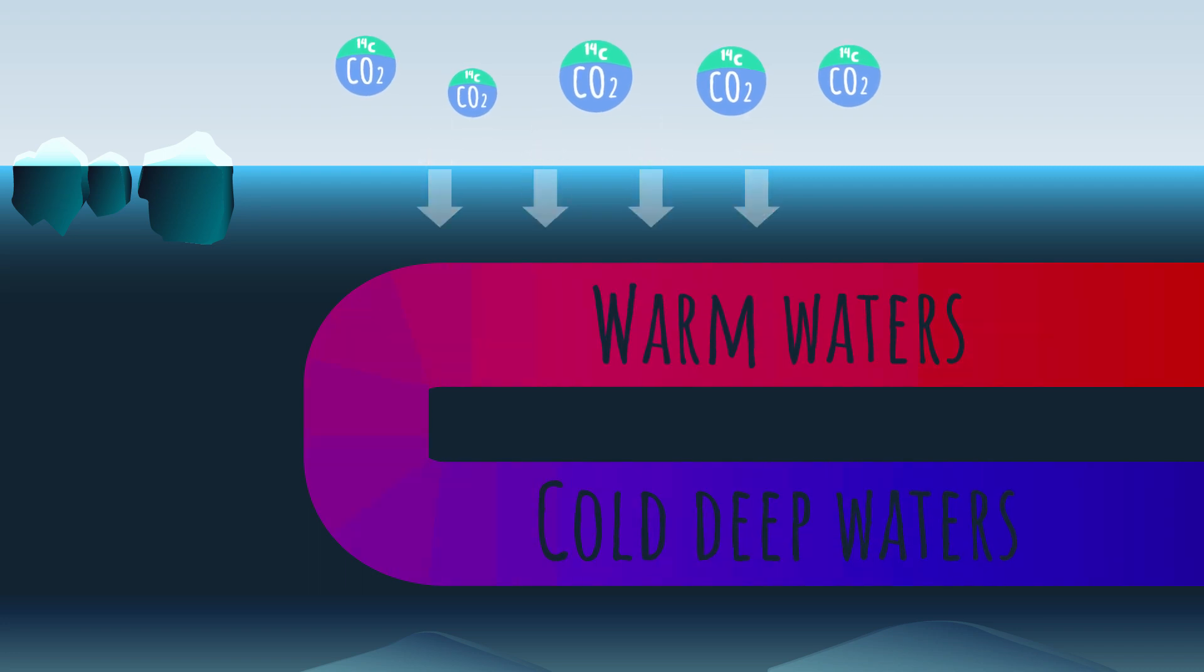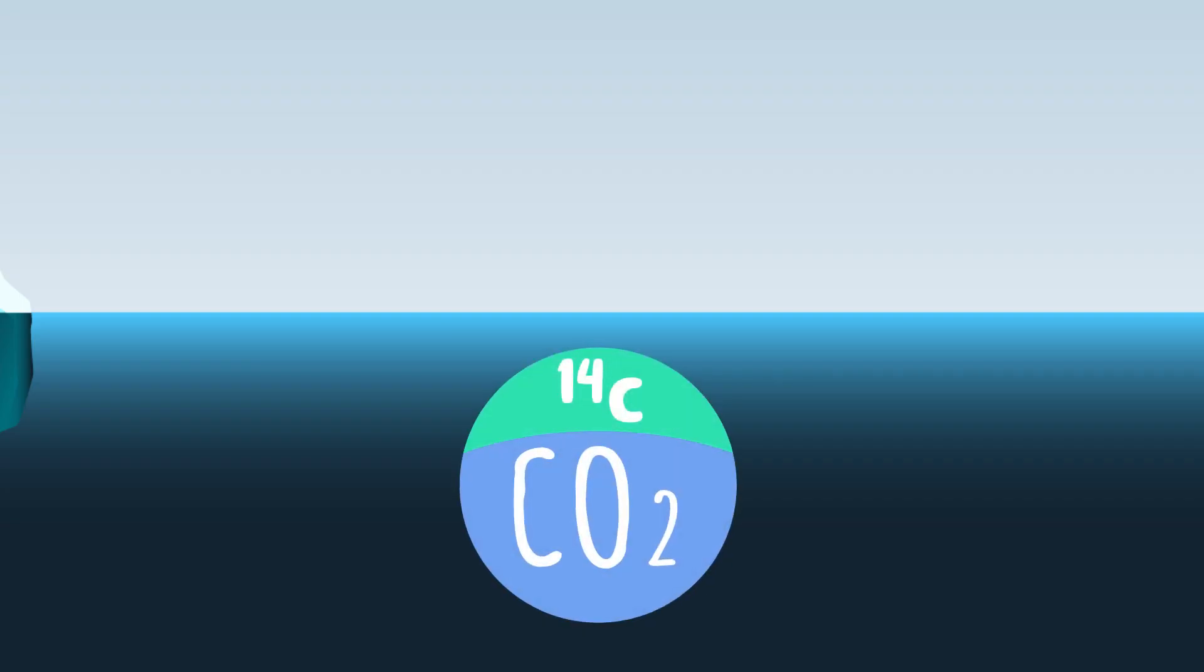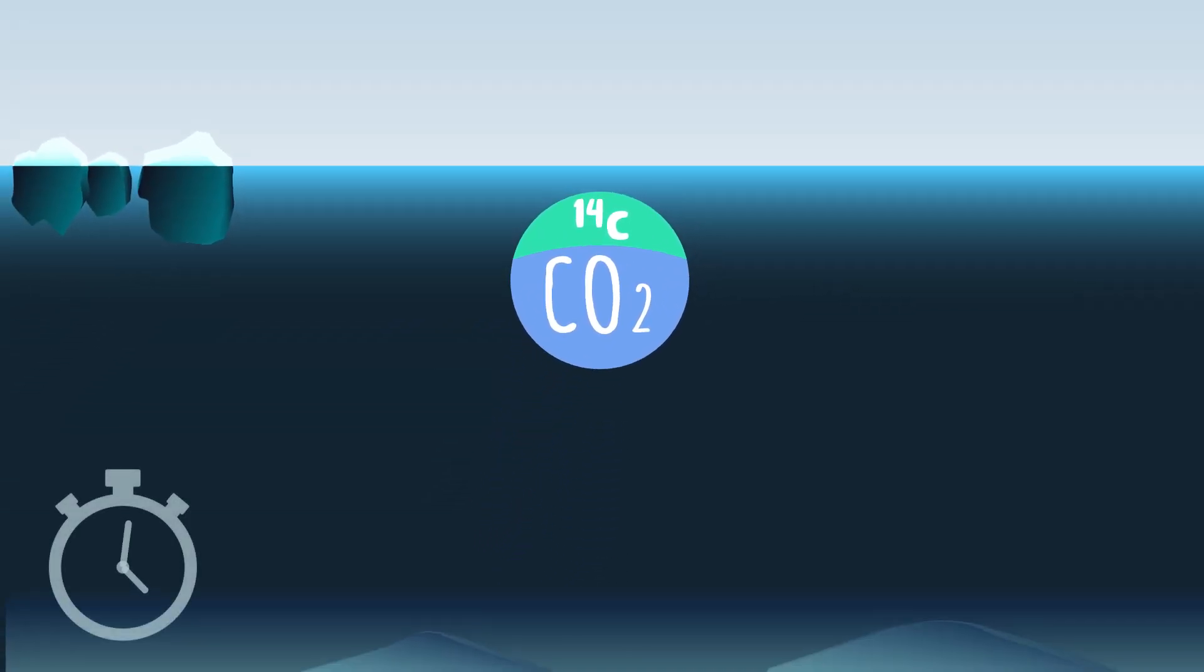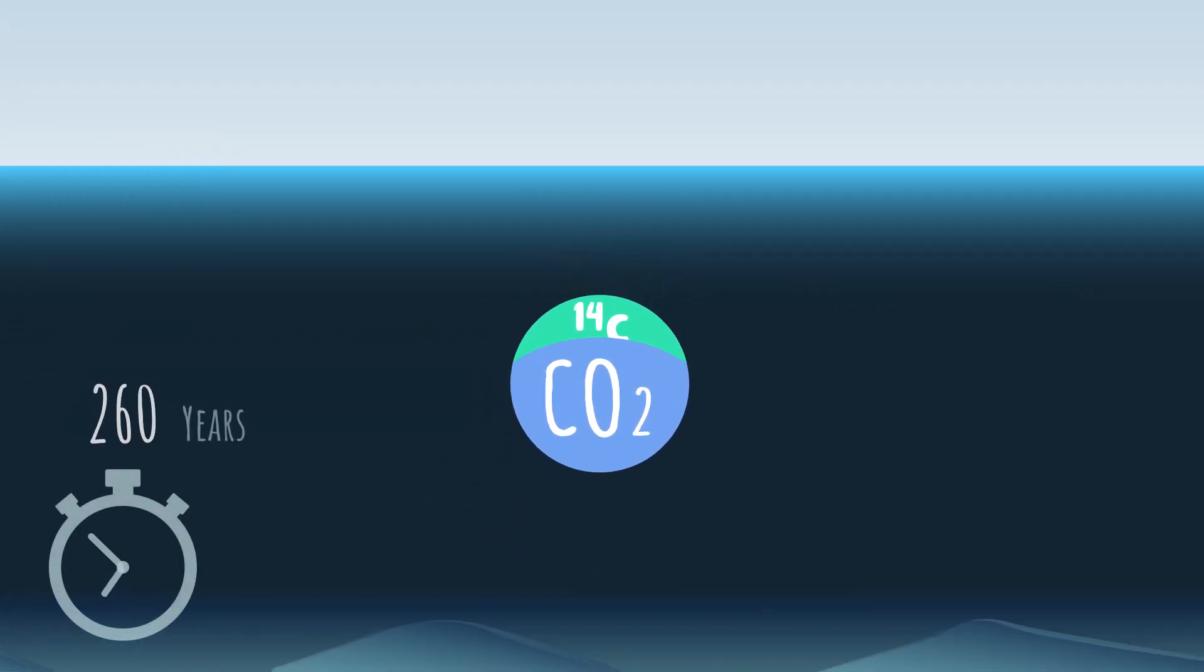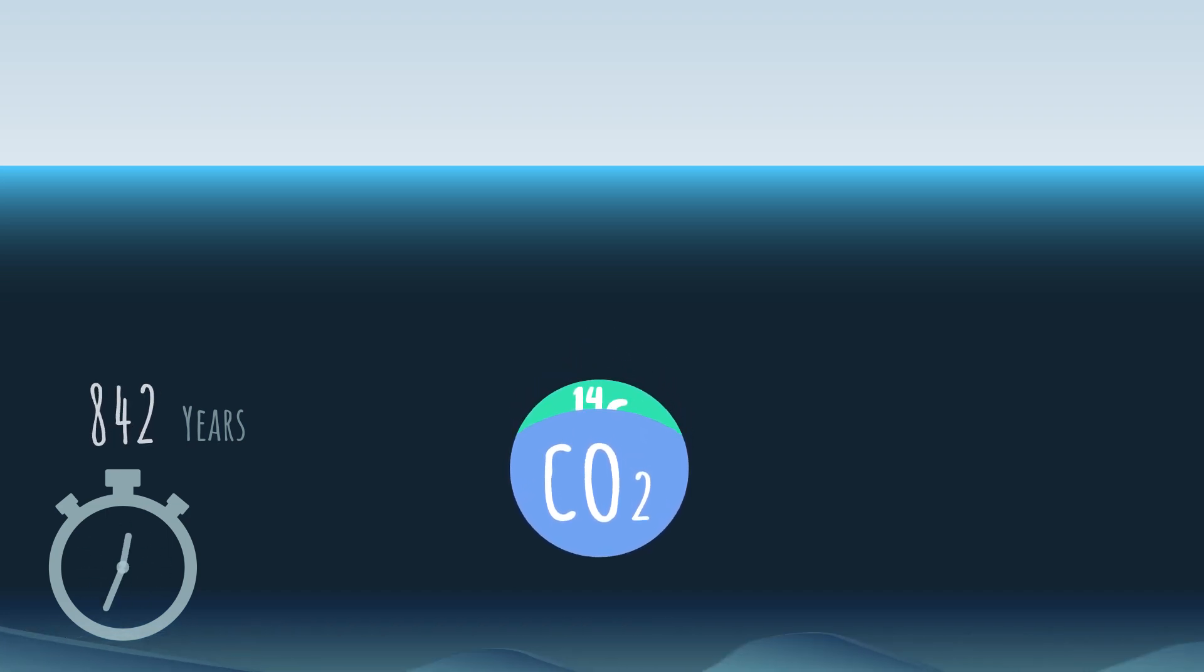CO2 in surface waters is rich in carbon-14, because it is almost in equilibrium with the atmosphere where carbon-14 is produced. Once isolated from the atmosphere, this CO2 enters into circulation and gradually loses its carbon-14.